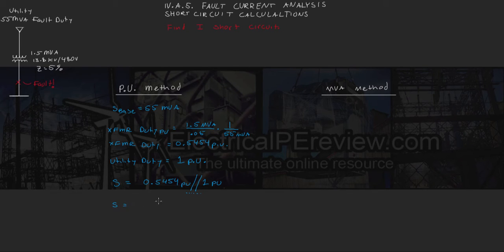So S is going to equal 1 over 1 over 0.5454 plus the reciprocal of 1 per unit, which is also 1. We can solve this as 0.3529 per unit. If we want to find the actual value of that, we're going to multiply by our base that we selected as 55 MVA.